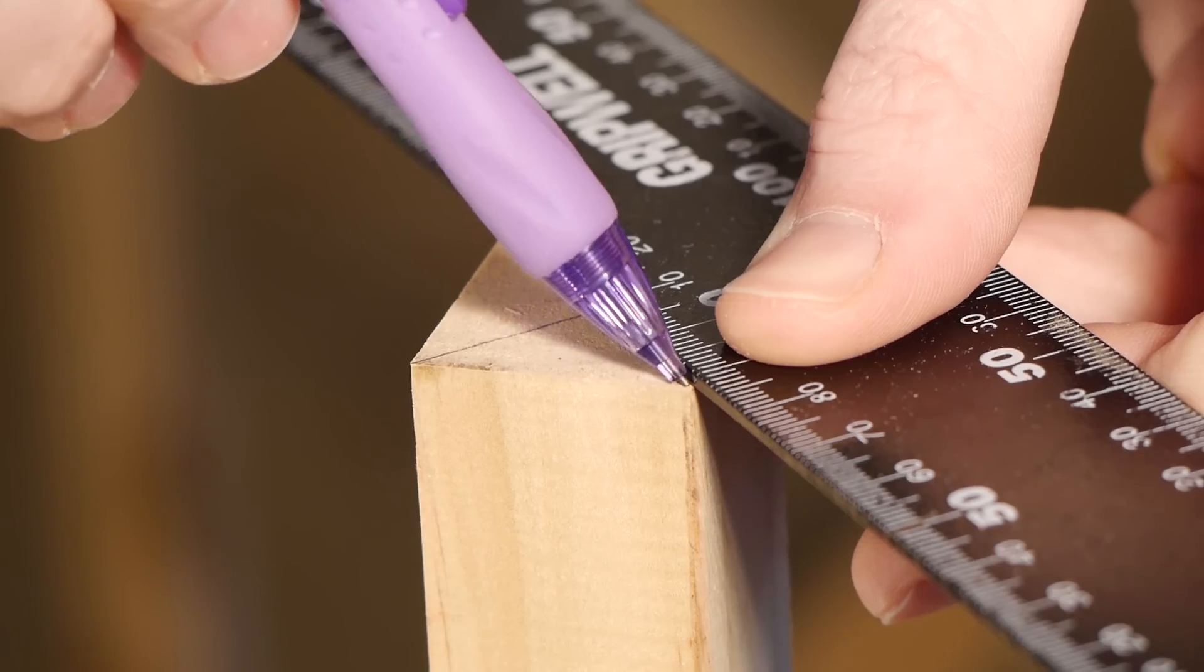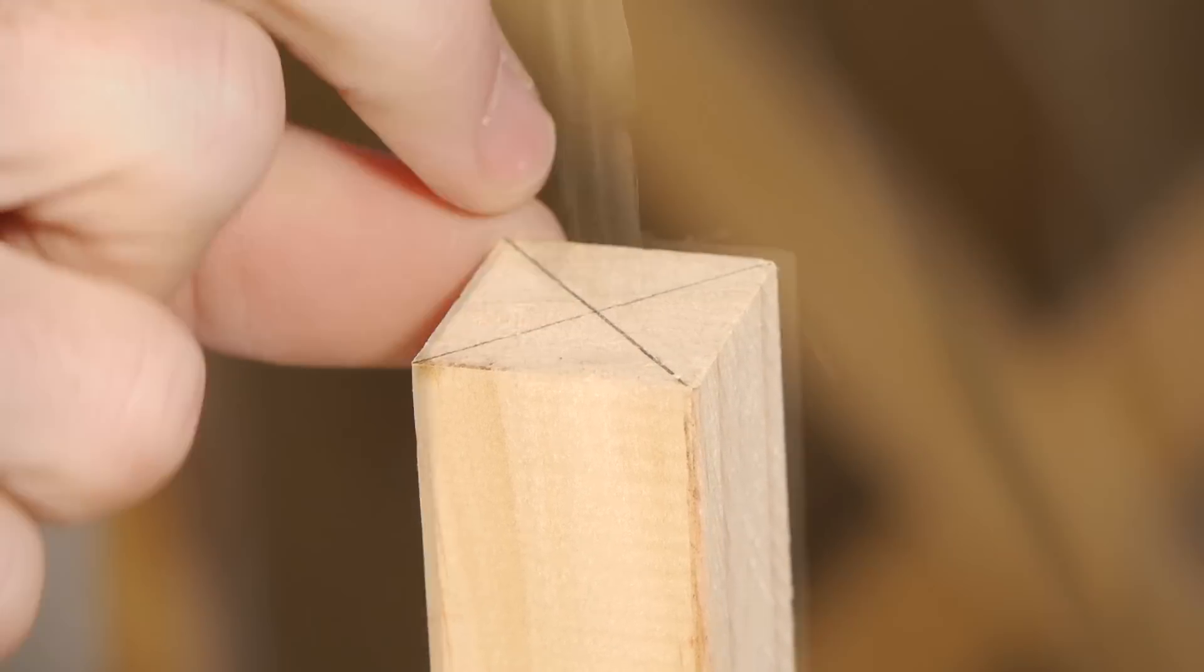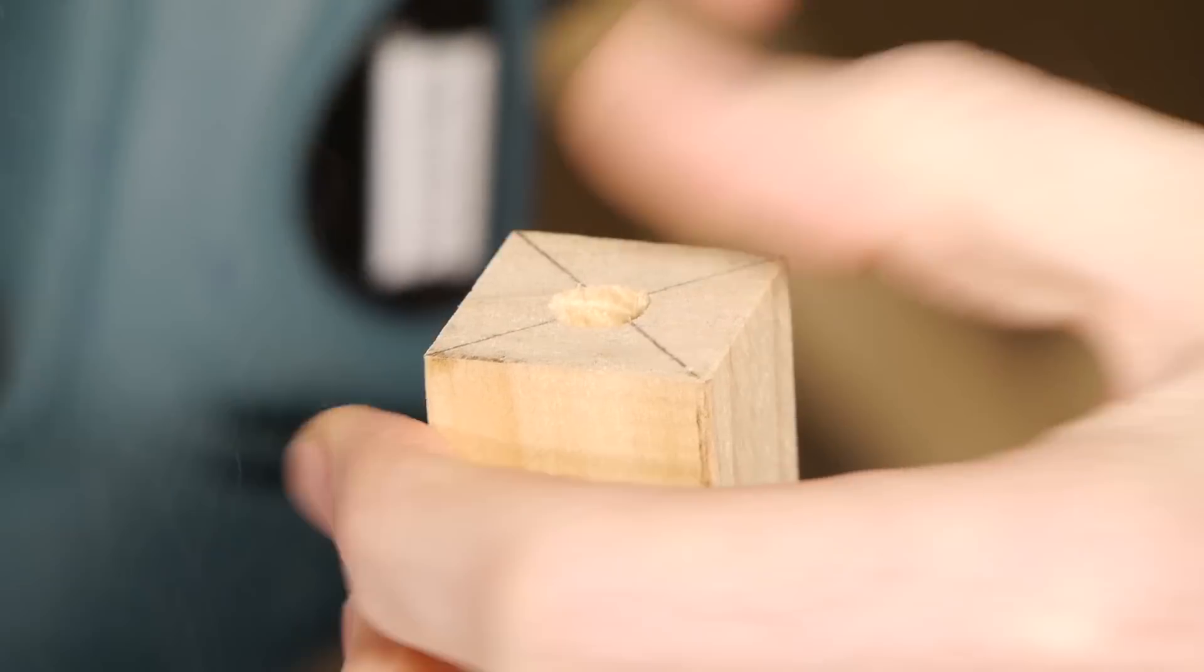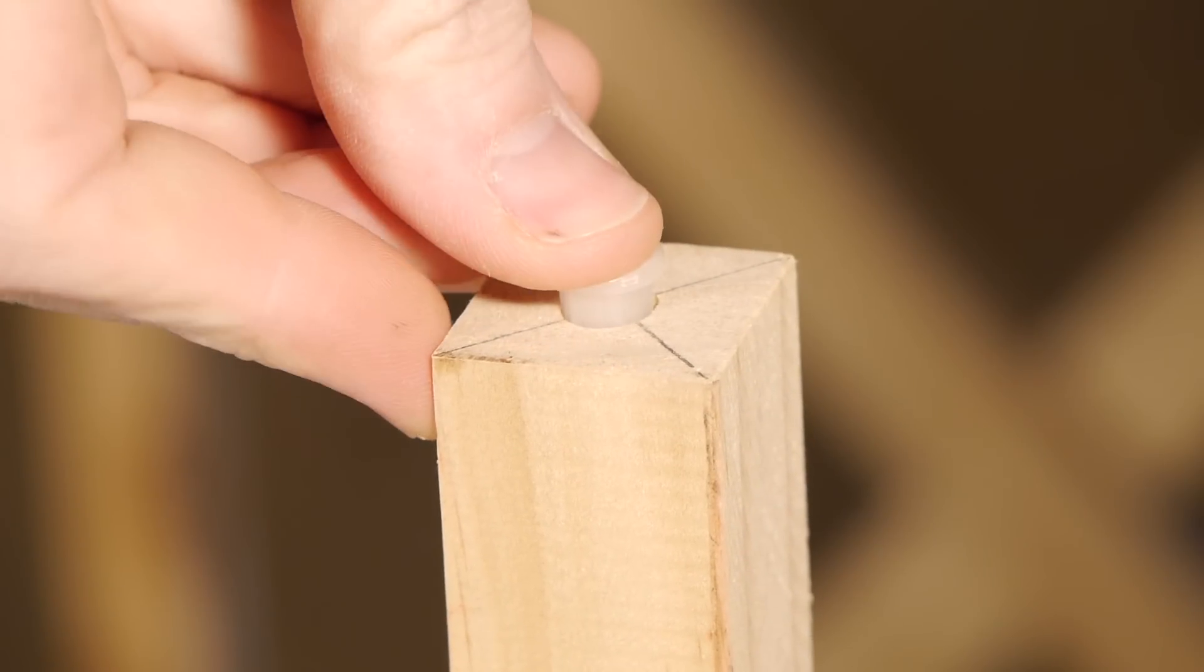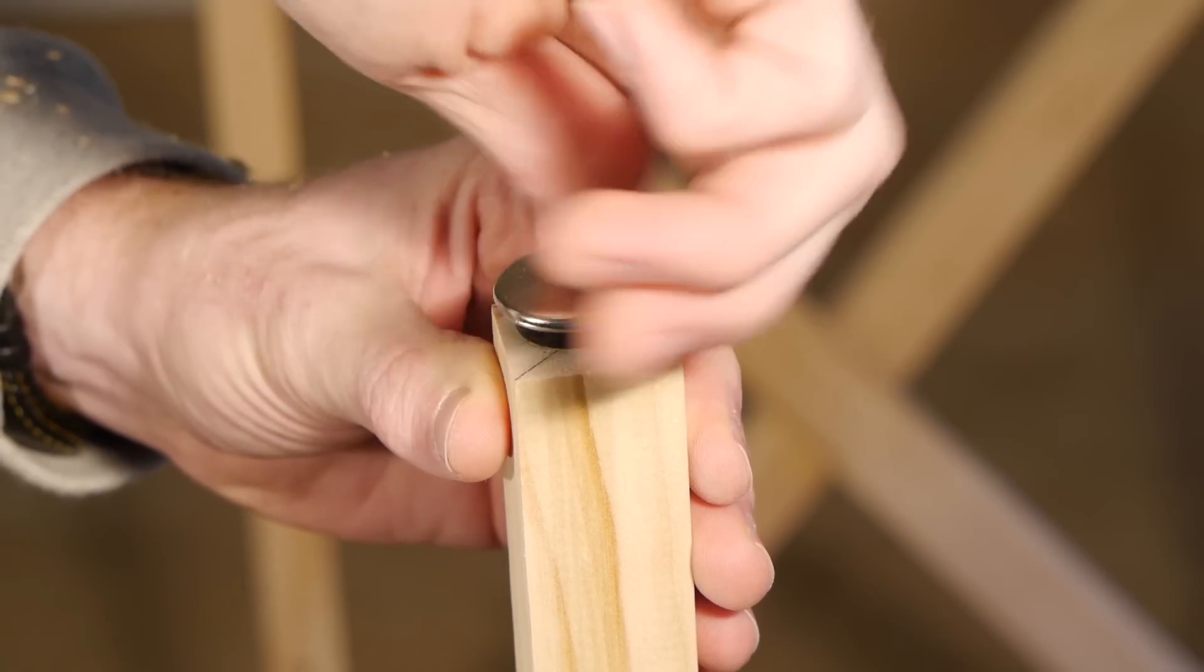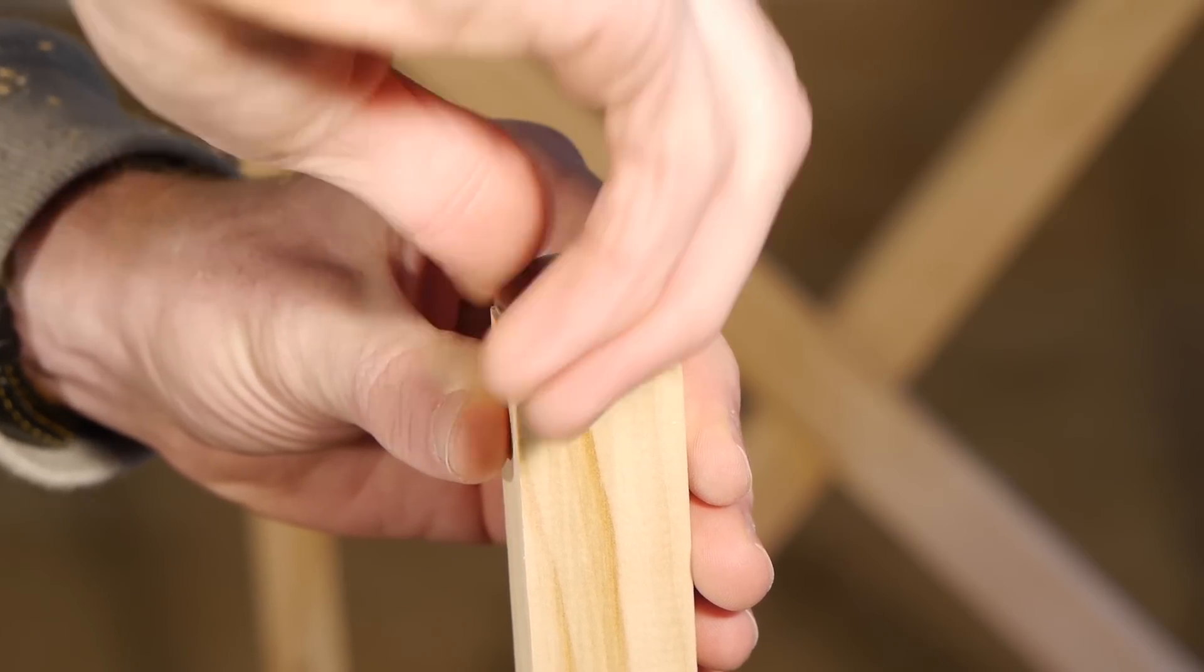Bracing along the length may be necessary depending on the layout. Another important step in module construction is the feet. This does two things: it lifts the wood off the ground preventing rot, and provided you have adjustable feet, it allows you to level the tables.